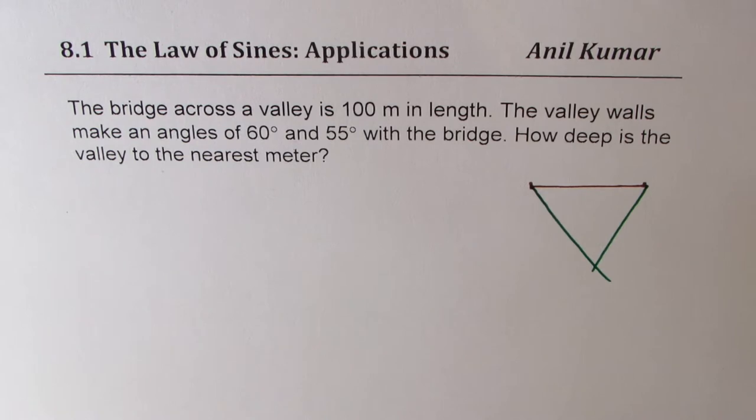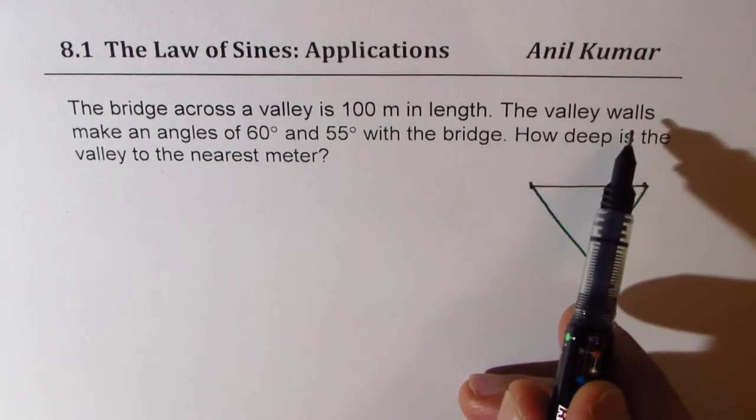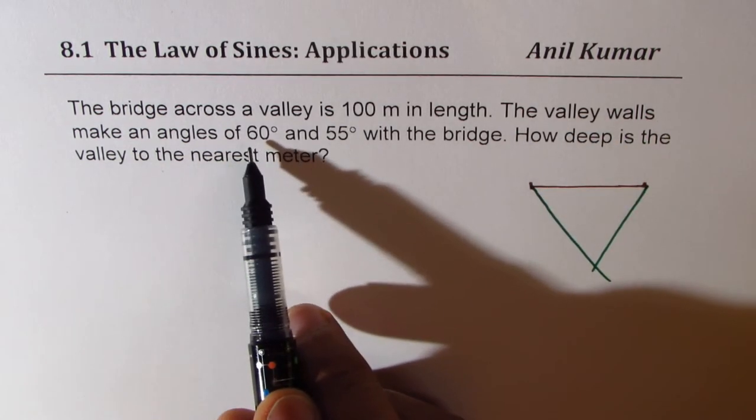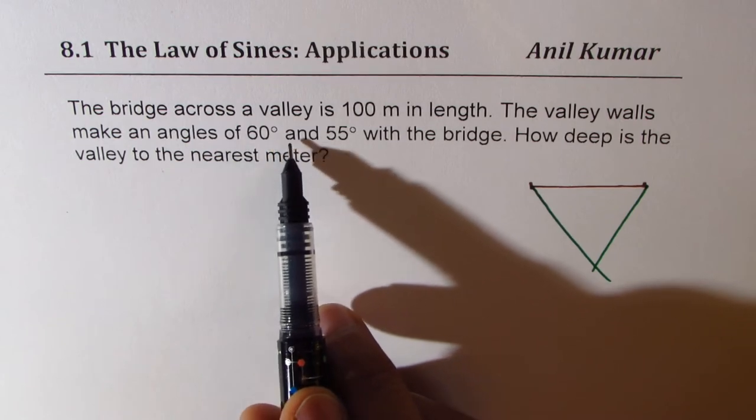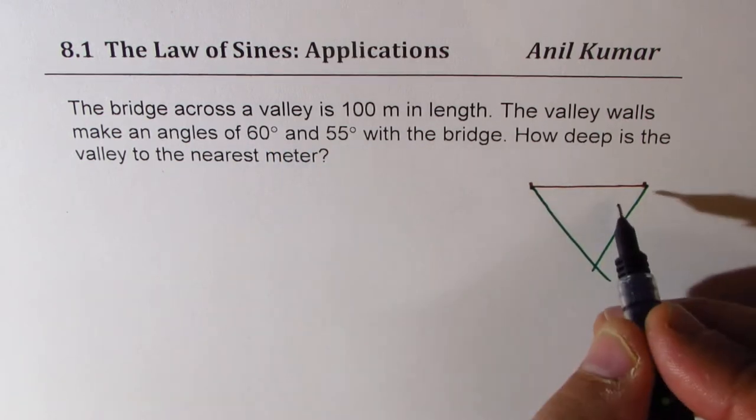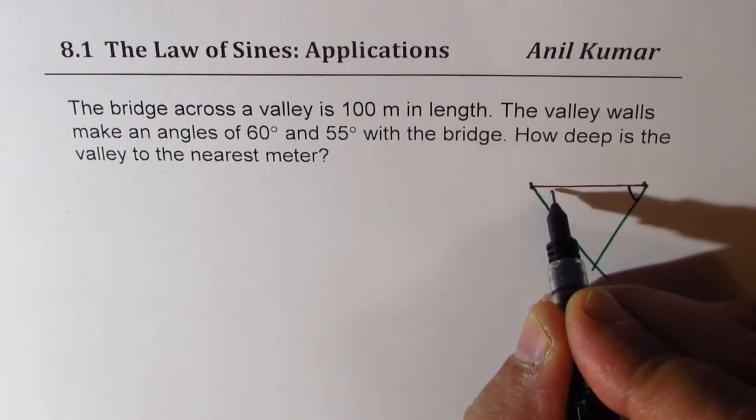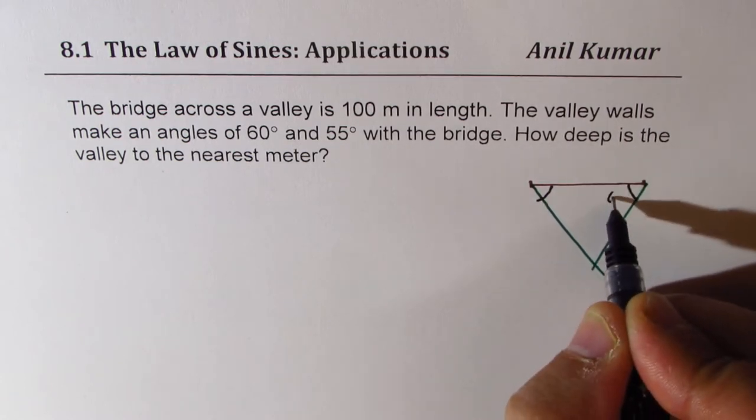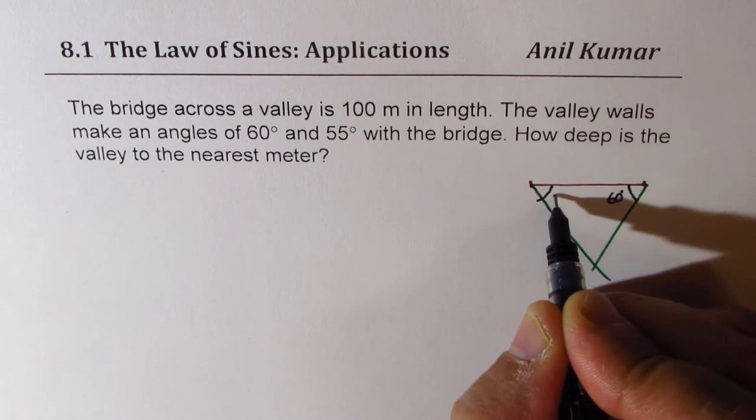So what we are given here is that the valley walls make an angle of 60 degrees and 55 degrees with the bridge. So these angles are given to us. One of them is 60 degrees. The other one is 55 degrees.